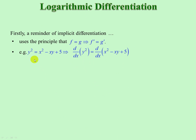An example: if y squared equals x squared minus xy plus 5, then the derivative of that equals the derivative of that. To differentiate — remember this is with respect to x — so when you differentiate y you have to include dy by dx. If you have y squared, that's a composite function where you differentiate the outside, 2y, times the derivative of the inside, dy by dx.